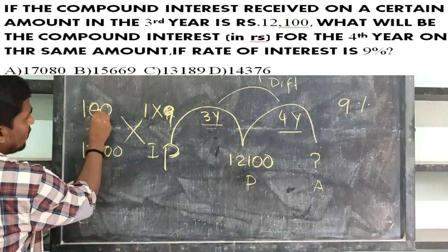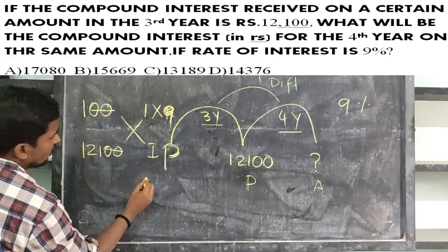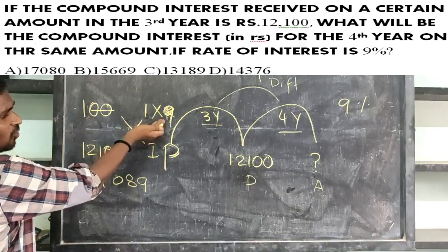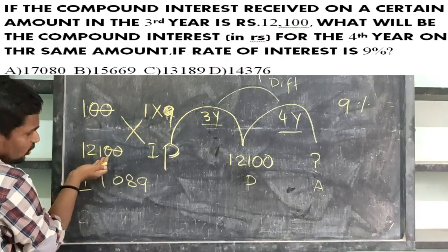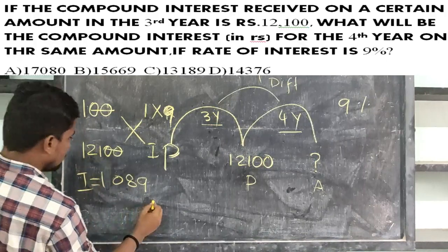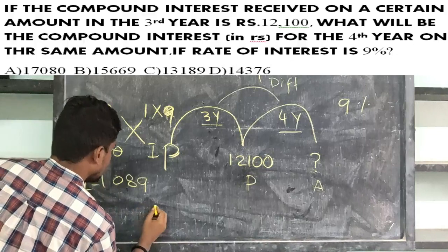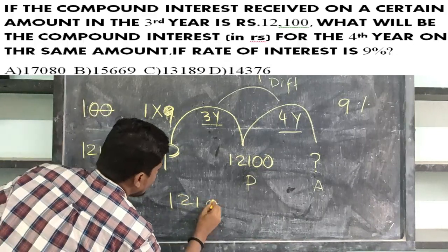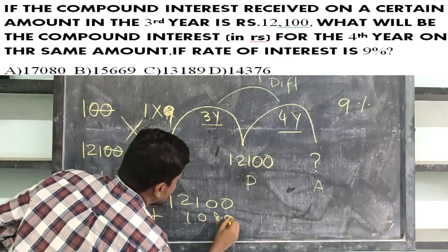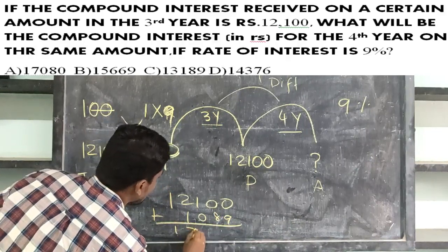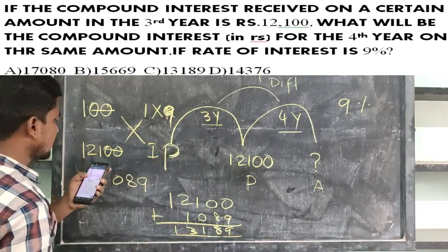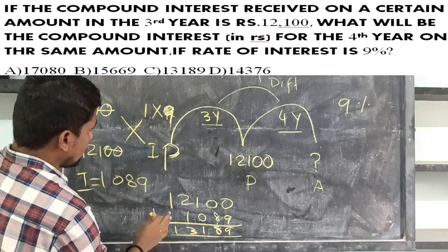If you multiply the rate of interest, you will add factors step by step. Repeating the multiplication with the rate of interest gives the compounded result across each year period. This is a method.